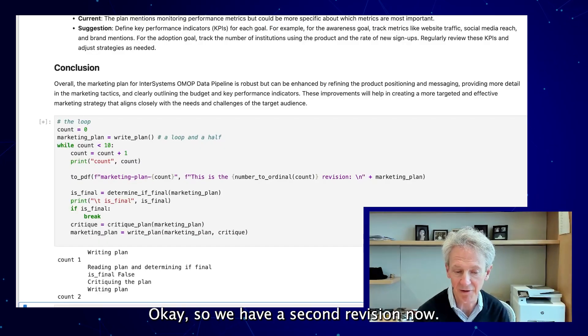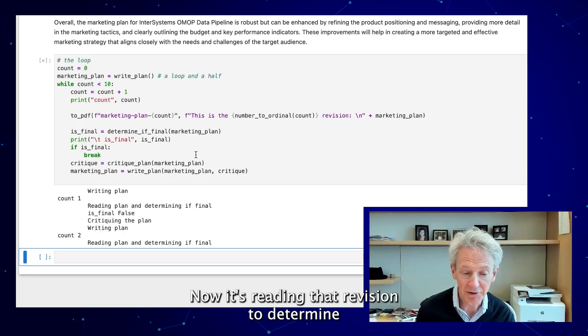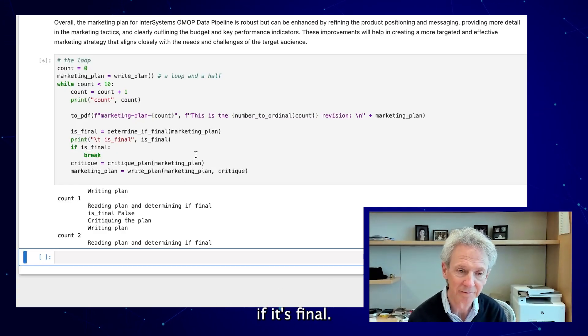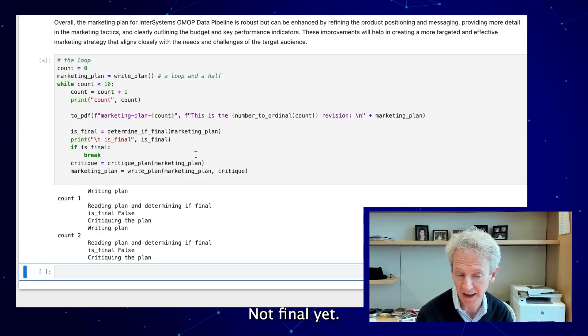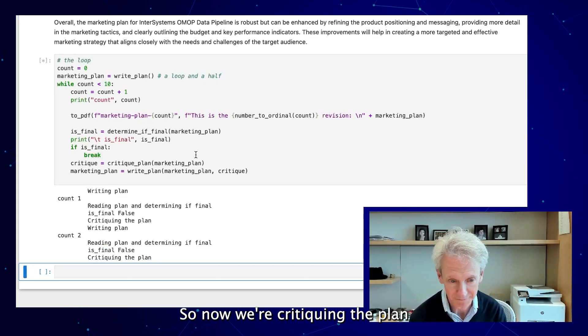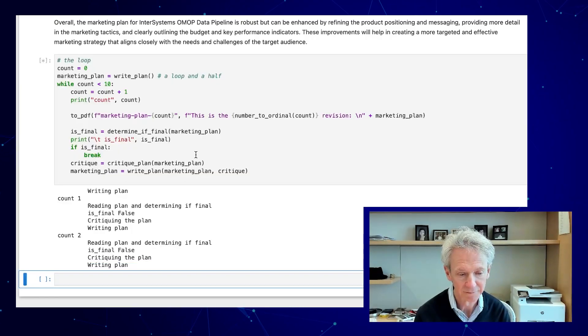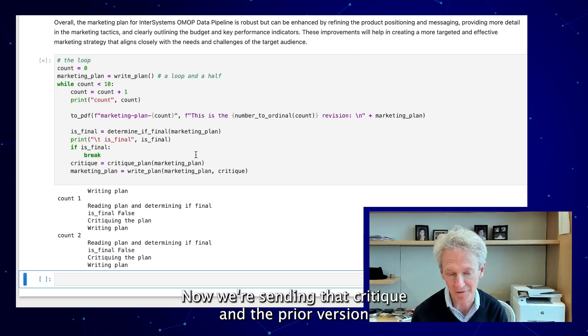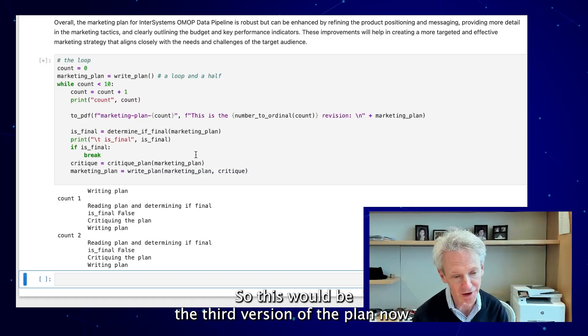So we have a second revision now. Now it's reading that revision to determine if it's final. Nope, not final yet. So now we're critiquing the plan again, the new version of the plan. Now we're sending that critique and the prior version to the writing agent to write a new version of the plan. So this would be the third version of the plan now.